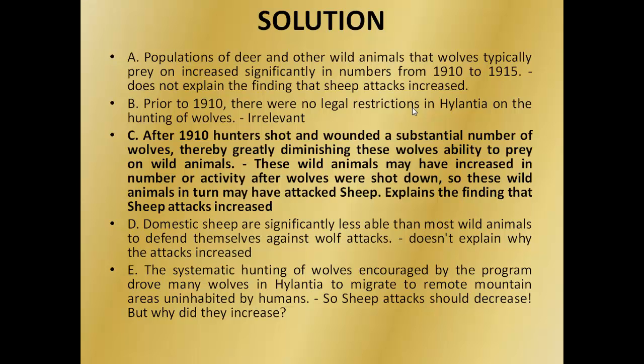Option C says after 1910, hunters shot and wounded a substantial number of wolves, thereby greatly diminishing these wolves' ability to prey on wild animals. These wild animals may have increased in number or activity thereafter. Wolves were shot down, so these wild animals in turn may have attacked sheep — this explains the finding that sheep attacks increased. So C is our answer.